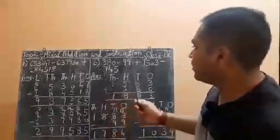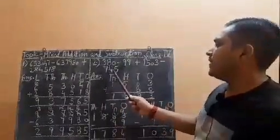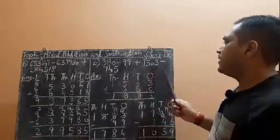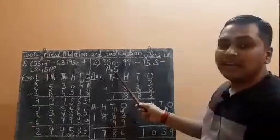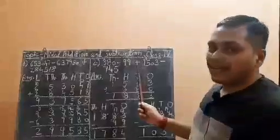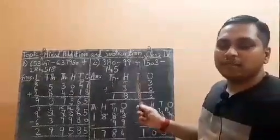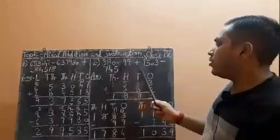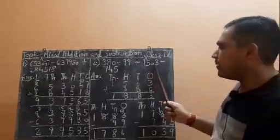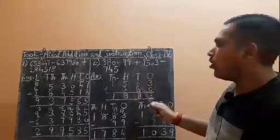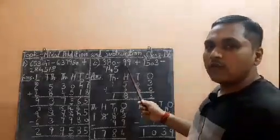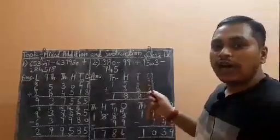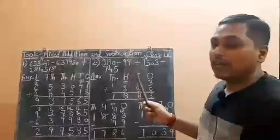Let's see one more question so it will be more clear. The question is 380 minus 99 plus 1503 minus 745. As I told you earlier, to find which numbers to add, you see the sign placed before the number, not after. So 380 will be added to 1503 because the addition sign is placed before 1503. You will not add 99.